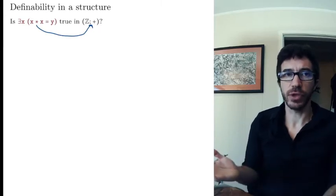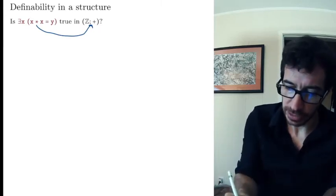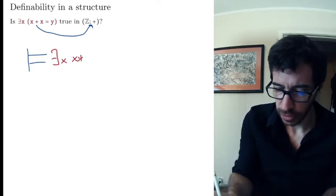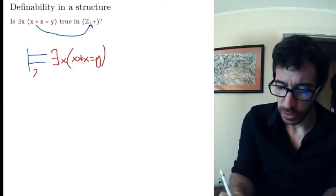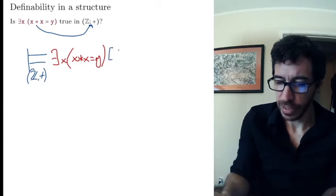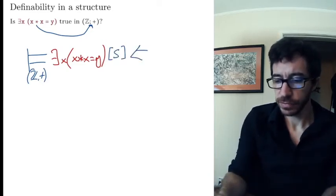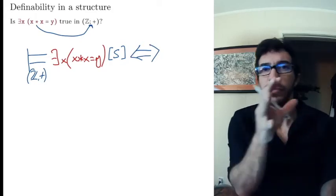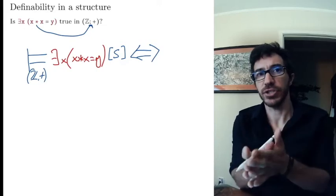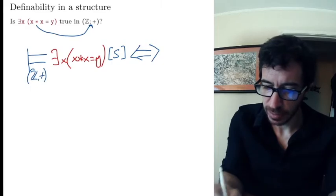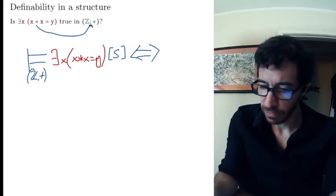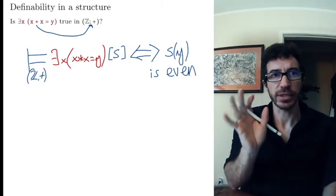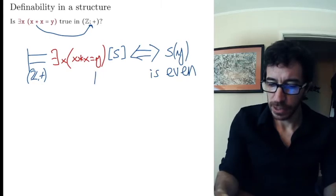To decide whether this is true or not we need to know the value of y. So the formula — there exists x such that x star x equals y — is true in the integers with plus according to some variable assignment s if and only if the value s(y) is even. This is true exactly when y takes an even value.